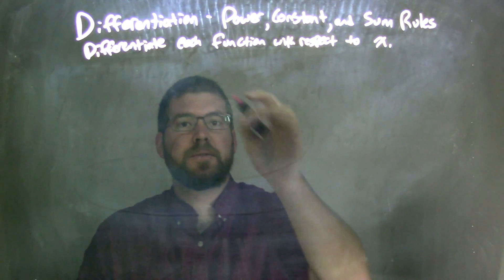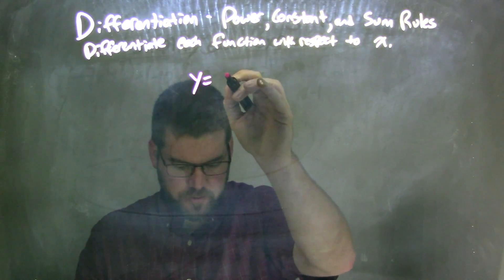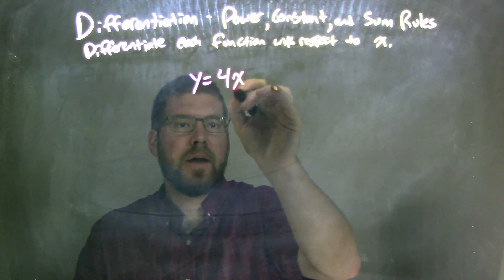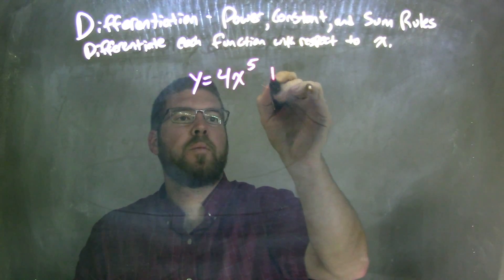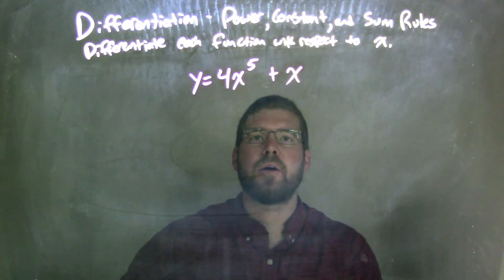So if I was given this function, y equals 4x to the fifth plus x, just x right there.